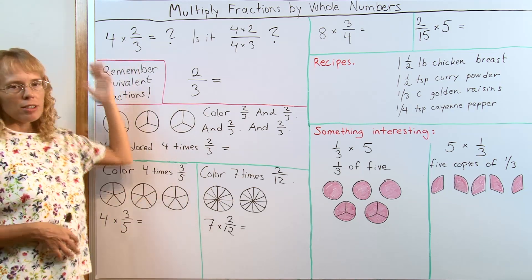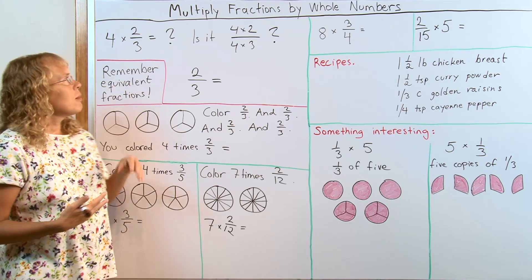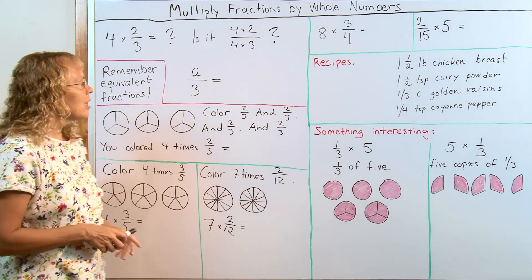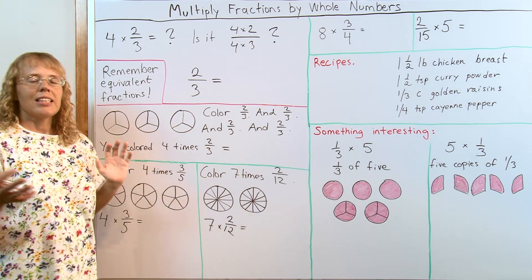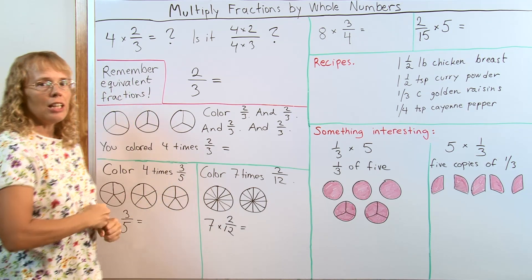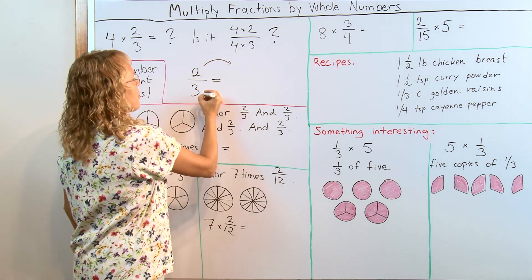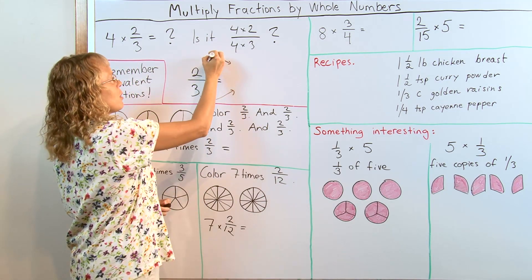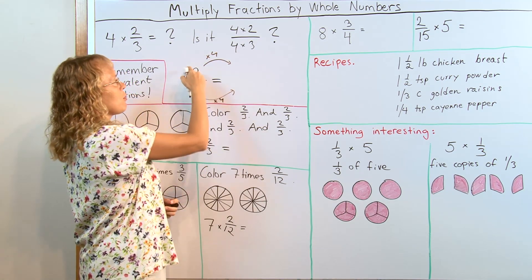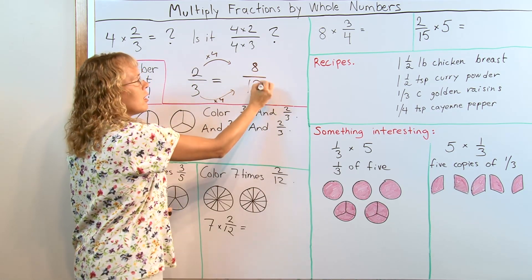For example, let's say we have 4 times 2 thirds, and the student, if he doesn't remember, might think this is how we do it: 4 times 2 and 4 times 3. But that cannot be so, because if you remember how to do equivalent fractions — as I've taught in another video and in my book — if we want to make an equivalent fraction, we can split each piece into four new pieces, multiply the numerator and denominator by four, and we get 8 over 12.